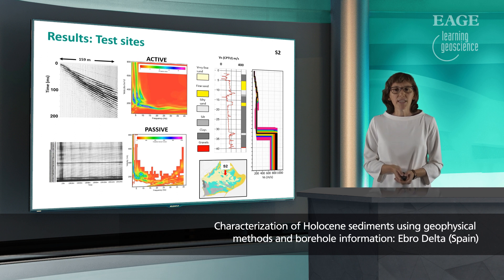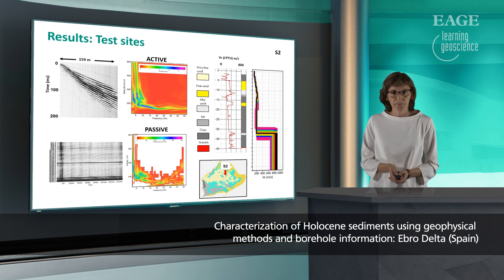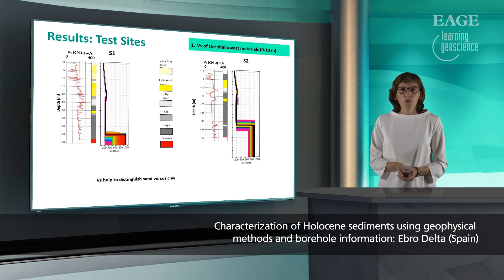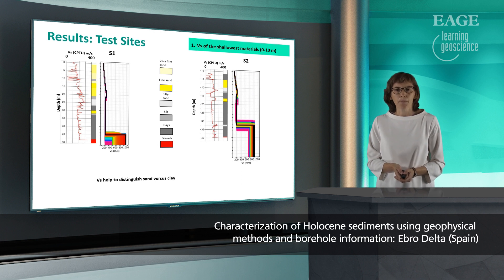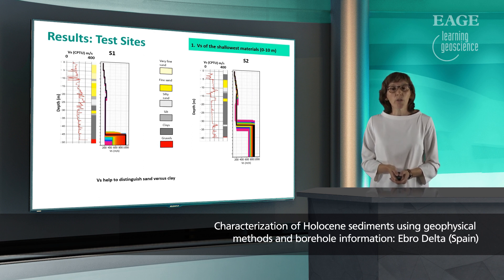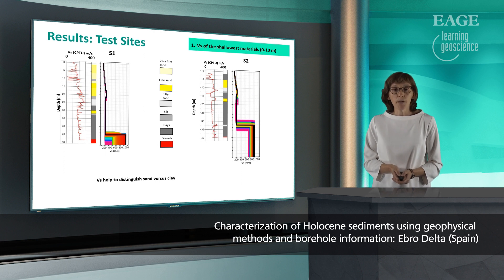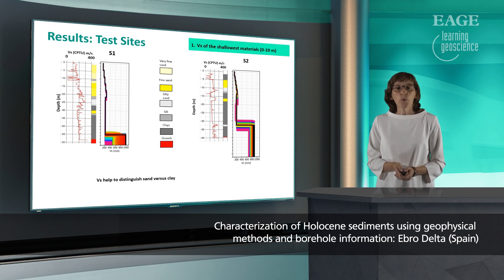In any case, a combination of active and passive measurements is a good approach to obtain the VS of the Holocene sequence down to the gravels. Regarding the first target focused on differences in surface sediment properties, we observed that the CPTU VS profiles show different VS values for the first 10 meters at S1 and S2 test sites. This pattern has also been recovered in the VS profiles from surface-wave analysis. According to the borehole description, this difference is related to the type of sediments — a higher percentage of sand is found at the shallow part of the S1 borehole. Using average velocity at all seismic profiles will help to resolve different environments along the delta.